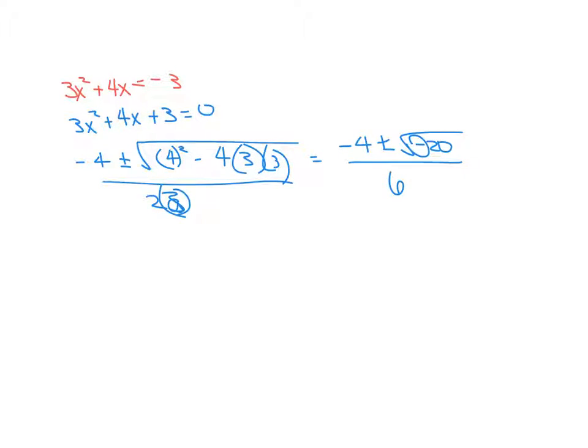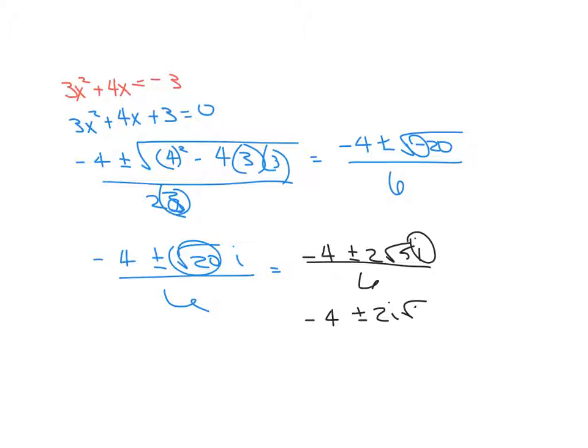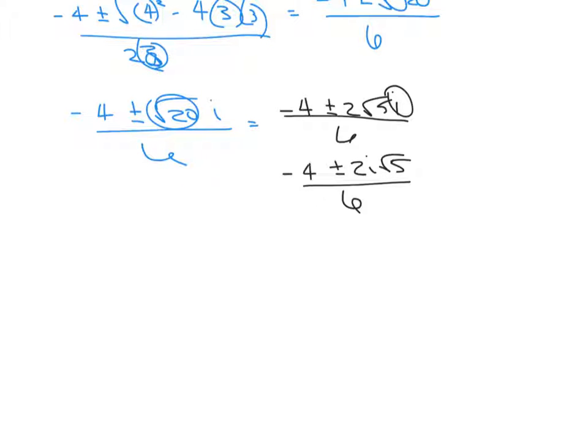So again, I'm going to pull that negative out for plus or minus square root of 20i over 6. And once we do that, we can reduce our square root of 20 to plus or minus 2 square root of 5i, all over 6, and again, they like to put the i in front. That looks a little prettier, they think, and that's fine.